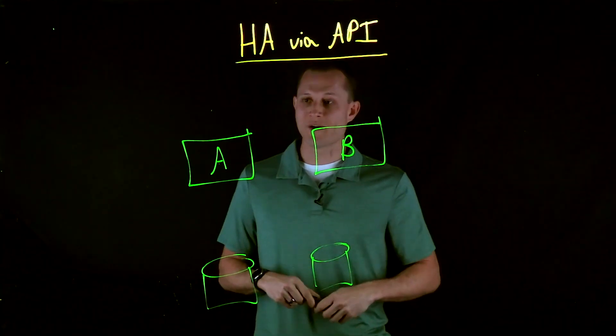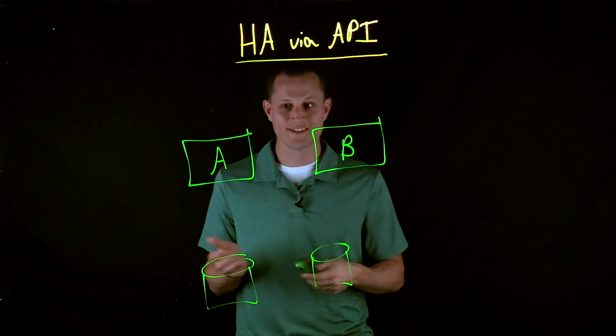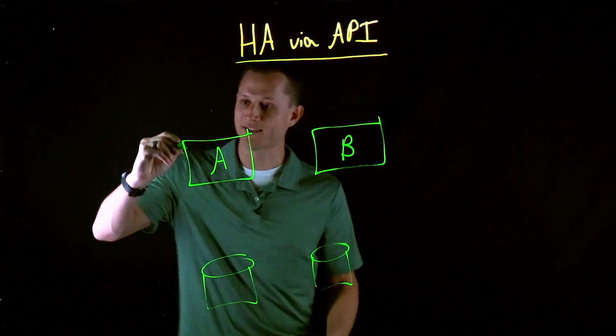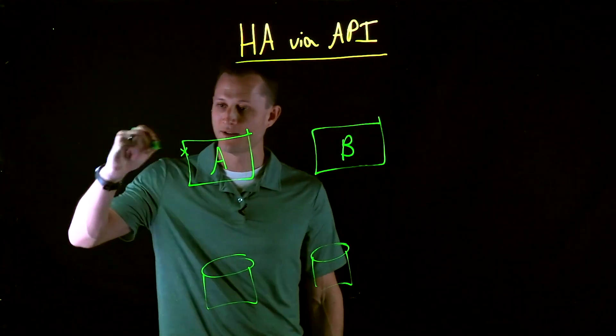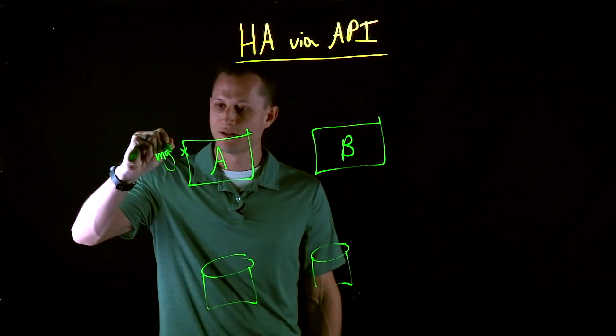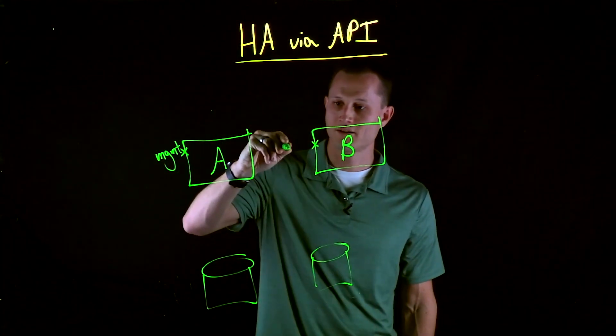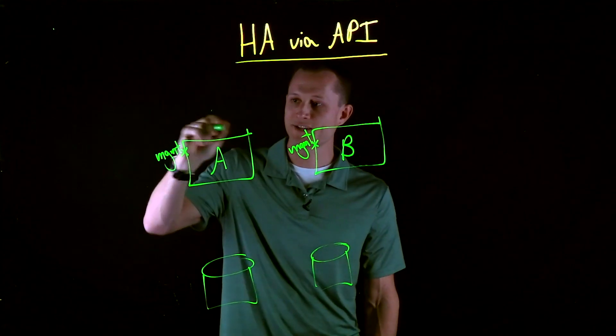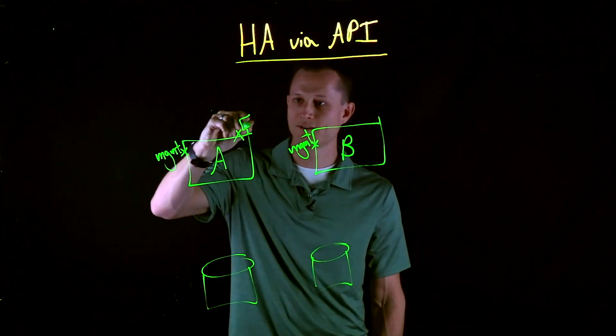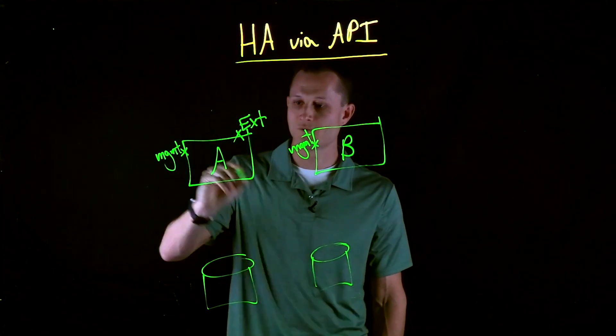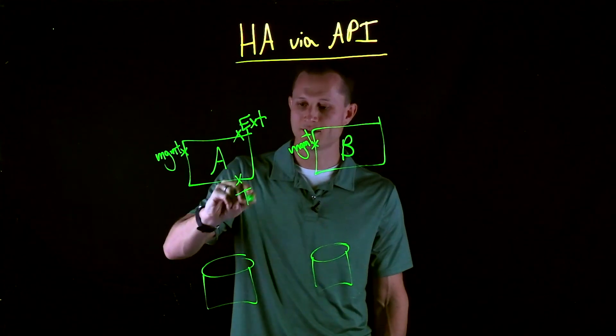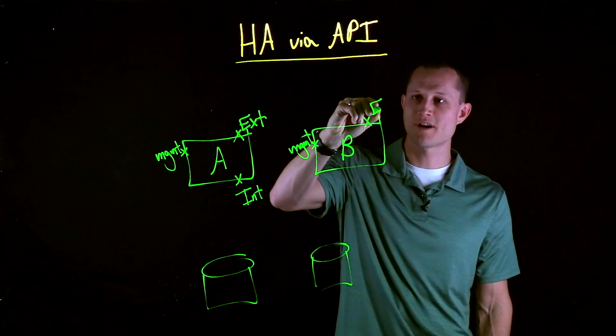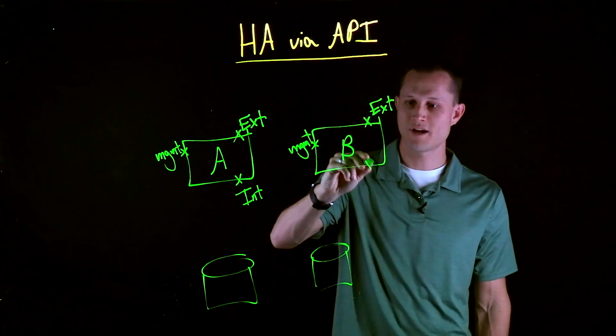The second requirement is to make sure we have IP configs on each of the boxes. We're going to draw a multi-NIC setup here. Each one will have a management. We're also going to have an external interface. We'll have an internal interface. And our standby box will have the same. We'll have an external. We'll have an internal.